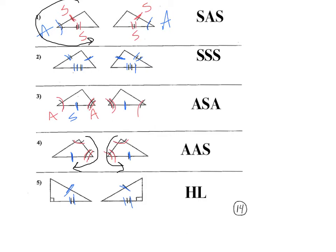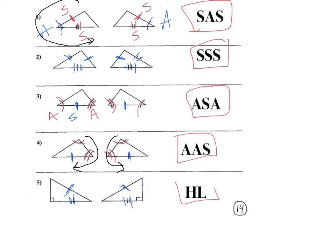So these are the five different ways that we can prove triangles are congruent. Once again, they are side, angle, side; side, side, side; angle, side, angle; angle, angle, side; and hypotenuse leg. Now, on to the next page.